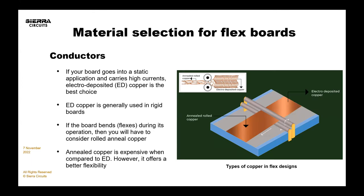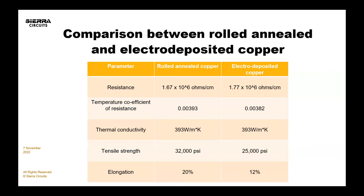One thing to really know the difference, other than electrical performance — flex materials use what's called ED copper, or electro-deposited copper. Actually, to correct that: rigid boards use ED or electro-deposited copper, and flex and rigid flex materials use rolled and annealed copper, which has better properties. And that's what this slide is about.